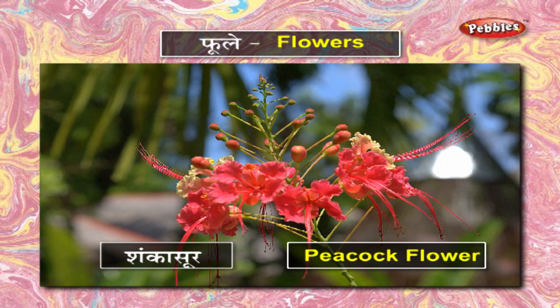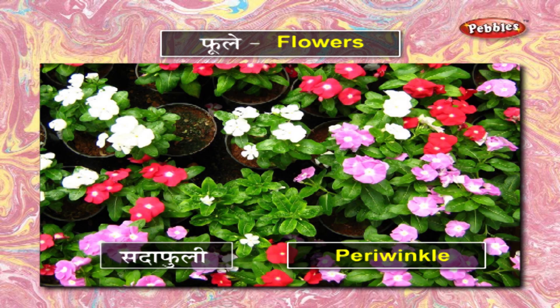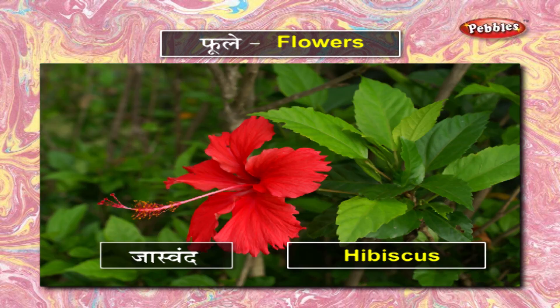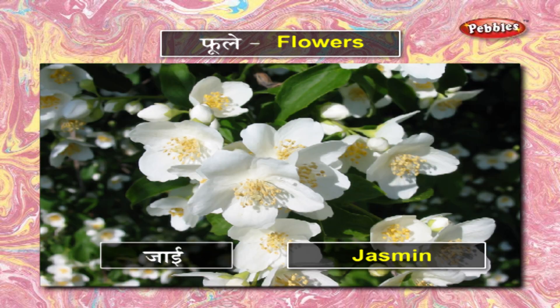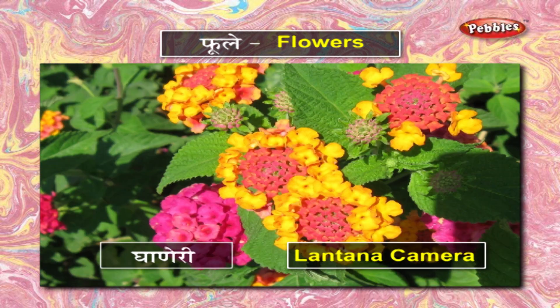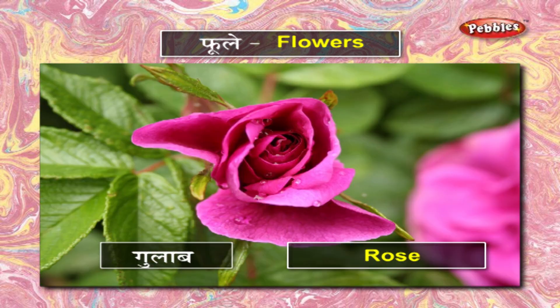शंकासूर. शेवंती. सदाफुली. सोनचाफा. जास्वंद. जाई. जूई. घाणेरी. गुलमोहर. गुलाब.